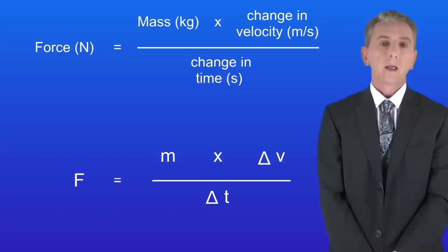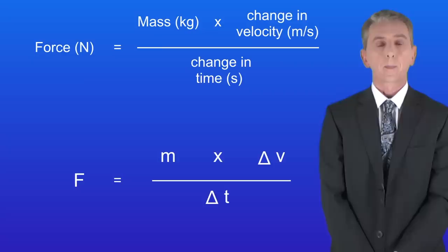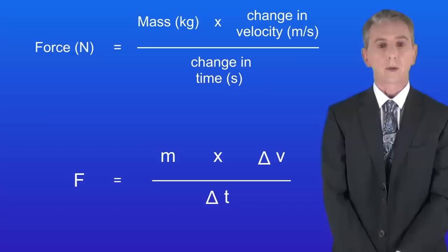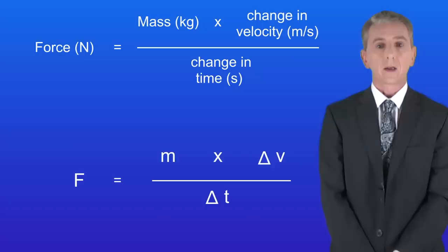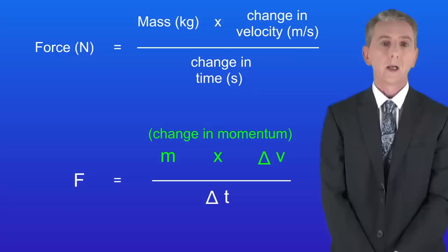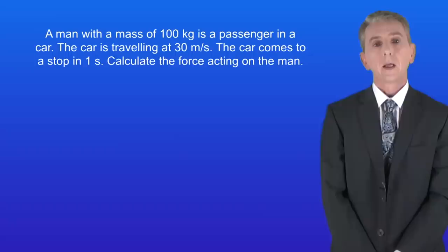Now we can combine these two equations together to calculate the force and I'm showing that equation here. The force equals the mass multiplied by the change in velocity divided by the change in time. I should point out that you are given this equation in the exam so you don't need to learn it. Now there is a key part of this equation that you need to understand. The mass multiplied by the change in velocity is simply another way of saying the change in momentum. So the force acting on an object is the change in momentum divided by the time.